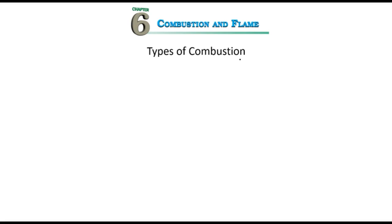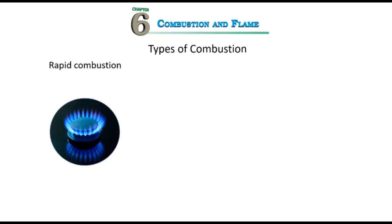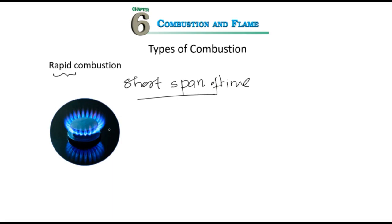There are three types of combustion. The first is rapid combustion. The conditions are that it should be rapid and give a large amount of heat. For example, just a spark can light LPG gas — in a short span of time it gets into flame. It gives more heat and light. Combustion of the substance is almost complete and a large amount of heat and light is produced.